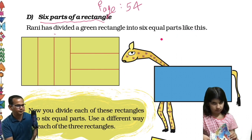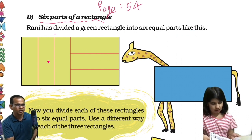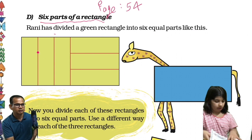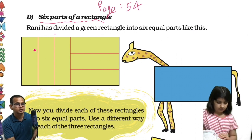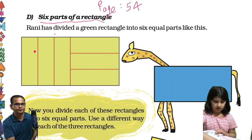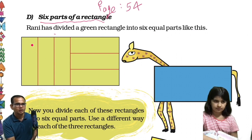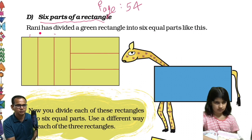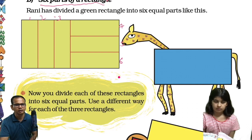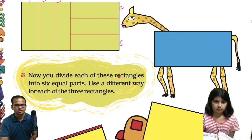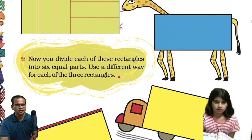Can you see, Avisha? Yes, I can see. Okay, six equal parts — one here, two here, three here, fourth one here, fifth one here and sixth here. So shall we read next, Avisha?